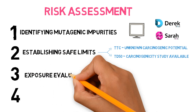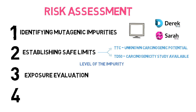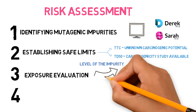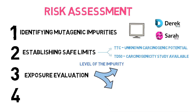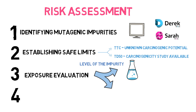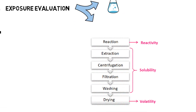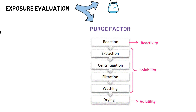The third stage is exposure evaluation. In this stage, the level of the impurity in the API must be determined to understand how much exposure the patient will have to that impurity. This can be done by using analytical methods or through understanding of the manufacturing process of the API and its capacity to eliminate the impurity, which we call the purge factor. The purge factor can also be calculated using in silico tools.